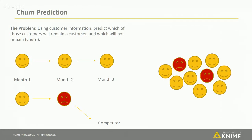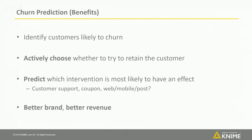An introduction to churn prediction: we want to use customer information to predict which customers will remain a customer and which will not — those who will not remain are the customers who are churning. A happy customer in month one may become unhappy in month two and leave to a competitor in month three. Given a large group of customers, can we predict who is likely to churn and who is not?